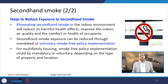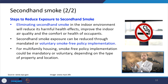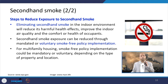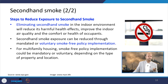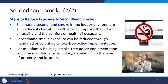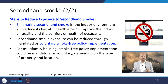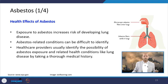To reduce secondhand smoke exposure, we should designate specific corners where smoking is allowed and prohibit it in living spaces. If someone wants to smoke they should go outside, such as to a balcony. In public places, there are designated smoking areas, and smoking is prohibited elsewhere, which significantly reduces exposure to secondhand smoke.